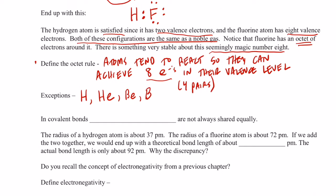Now, in covalent bonds, it's important to remember that the electrons are not always shared equally. Let me give you some experimental data. The atomic radius of the hydrogen atom is about 37 picometers. The atomic radius of the fluorine atom is about 72 picometers.